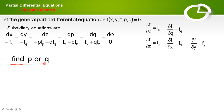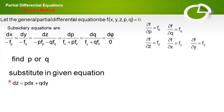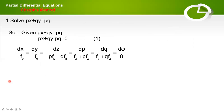As already explained, we have to find either p or q, substitute this value in the given equation using this formula, and find the solution. Let us see one example: solve px plus qy equal to pq. First of all, write down the subsidiary equation.